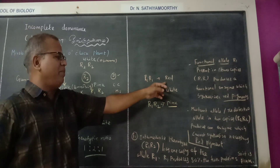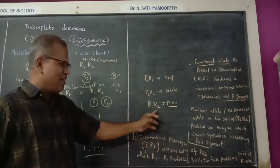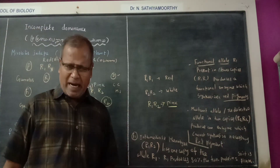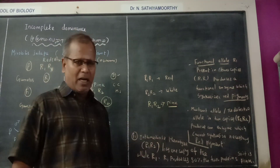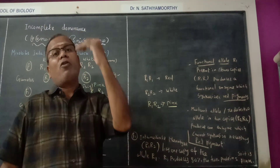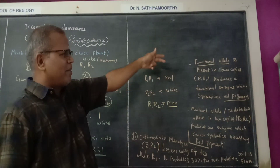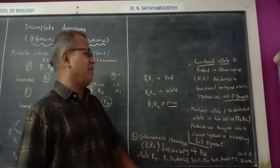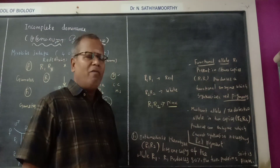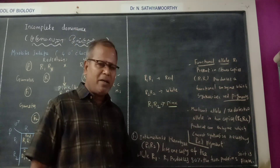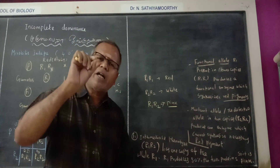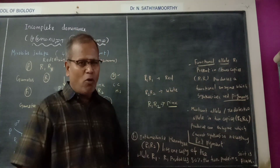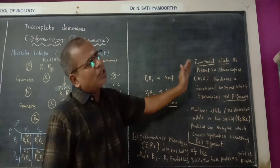R1R1 is responsible for red colour. R2R2 is responsible for white colour. R1R2 is in a heterozygous condition, and it produces pink coloured flowers. If the R1 gene is present in two copies, then it produces a functional enzyme which is responsible for the synthesis of red pigment.